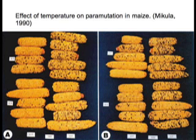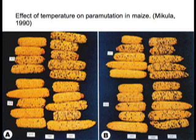Temperature can also play a large role in pigmentation. Corn exposed to warmer temperatures in the left-hand columns experienced more paramutation — repression of the R allele — than corn exposed to cooler temperatures in the right-hand columns. Additionally, the frequency of excision of some transposons has been linked to temperature. This demonstrates that many environmental factors can influence flower pigmentation.